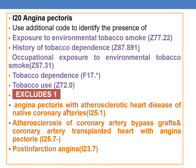Codes under Excludes 1 cannot be coded with the principal code. Therefore, the I20 series for angina pectoris cannot be coded together with I25.1 — angina pectoris with atherosclerotic heart disease of native coronary artery — nor with I25.7 series for atherosclerosis of coronary artery bypass graft and transplanted heart with angina pectoris, nor with I23.7 for post-infarction angina.